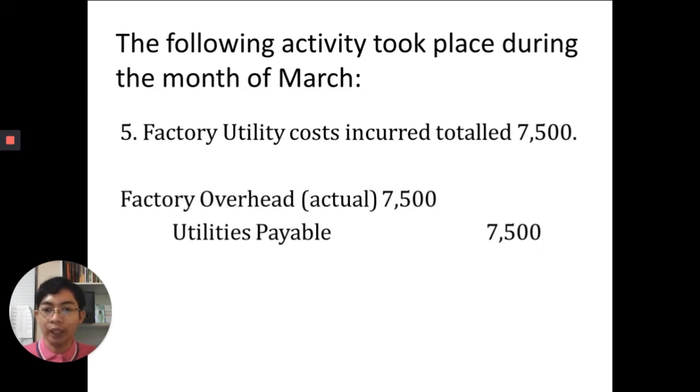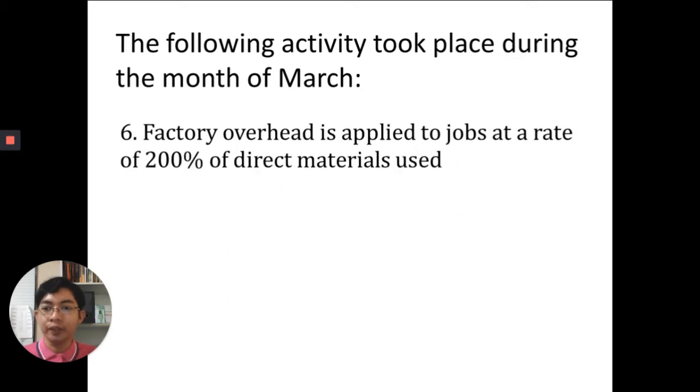Number five: factory utility costs incurred total $7,500. The entry would be debit factory overhead actual and credit utilities payable $7,500.